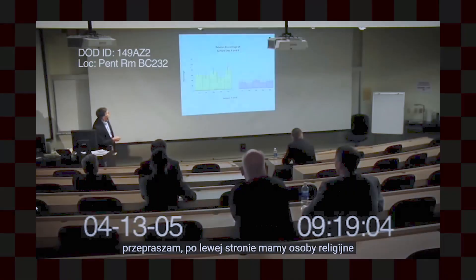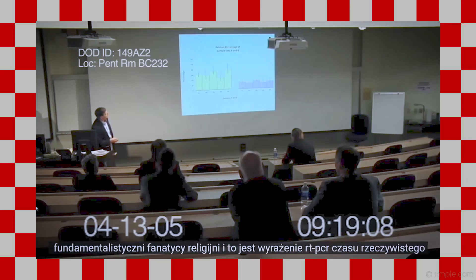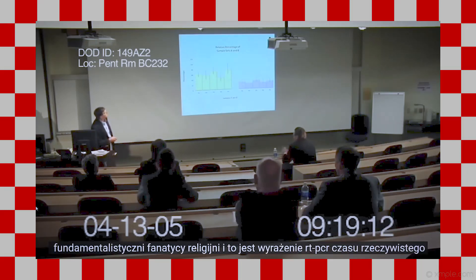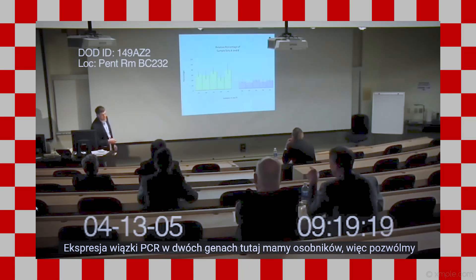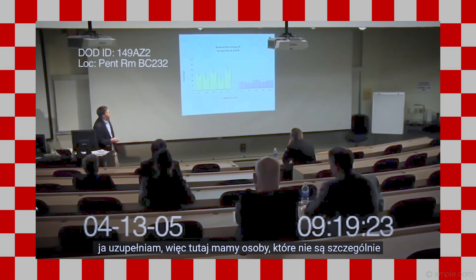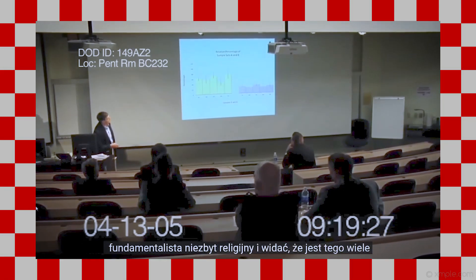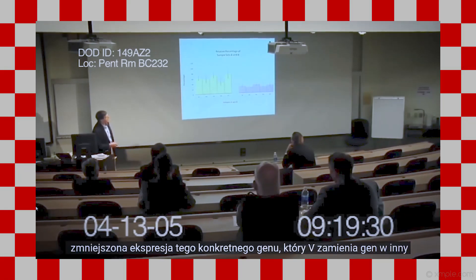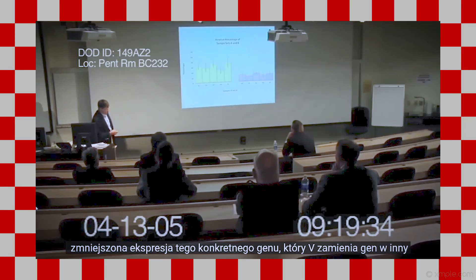On the left over here, we have individuals who are religious fundamentalists, religious fanatics, and this is the expression — RT-PCR, real-time PCR expression of the VMAT2 gene. Over here, we have individuals who are not particularly fundamentalists, not particularly religious, and you can see there's a much reduced expression of this particular gene, the VMAT2 gene.